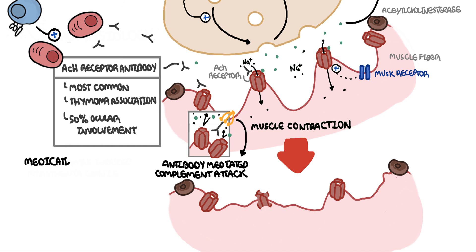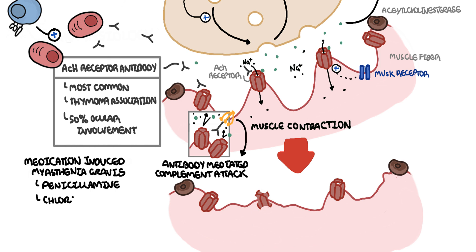Myasthenia gravis can also be caused by certain medications. Penicillamine induces the production of acetylcholine receptor antibodies. Other medications causing myasthenia gravis include chloroquine, an antiparasitic agent, and quinidine, an antiarrhythmic.